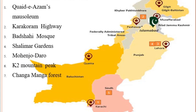Number six option is K2 mountain peak, which is located in Gilgit-Baltistan, so we will write number six in Gilgit-Baltistan. Our last option is Changamanga Forest, which is located in Punjab, so in province Punjab we will write number seven.